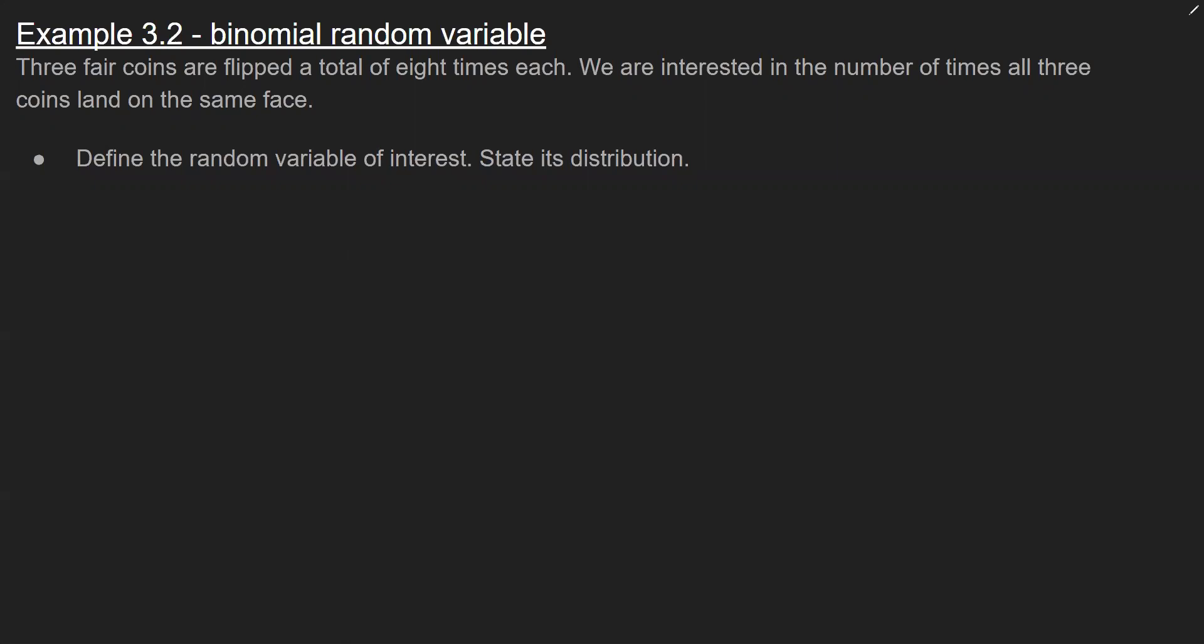Remember from unit two, a random variable is a number that you are interested in tracking, and the possible values are dependent on that definition. For this problem, we're going to count how many times all three coins land on the same face. That is my random variable. Let me use X as the number of times all three coins land on the same face.